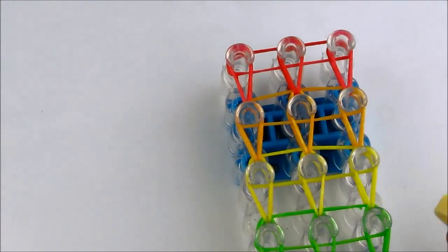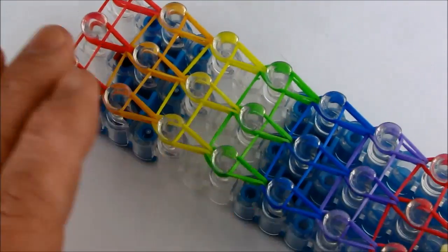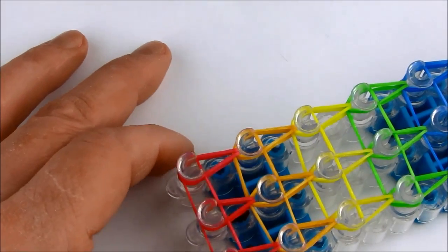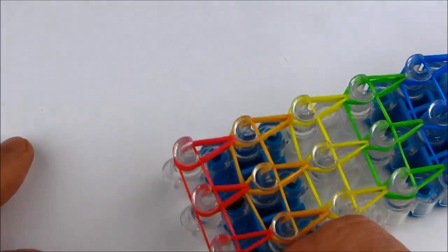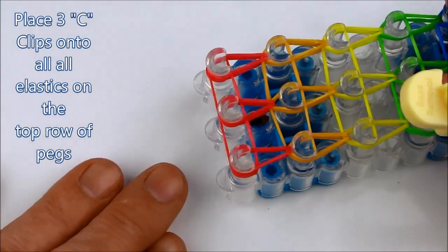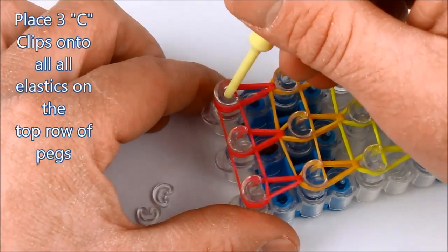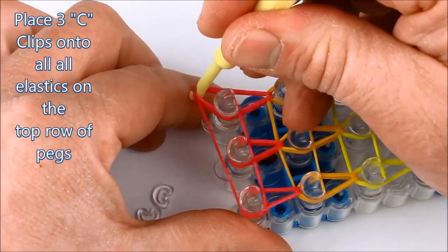Once we reach the top of the loom, we want to place the c-clips onto all the top pegs. Once again, we could use the loom tool to assist us with this.